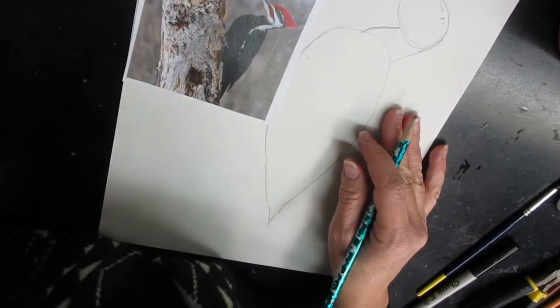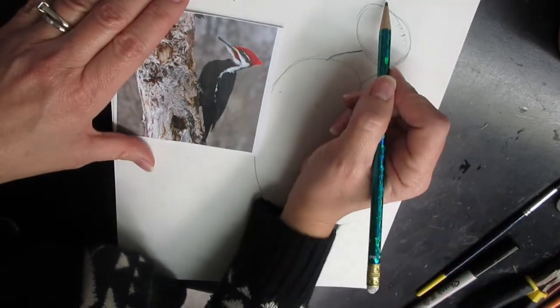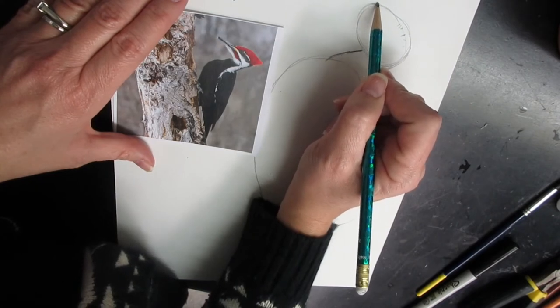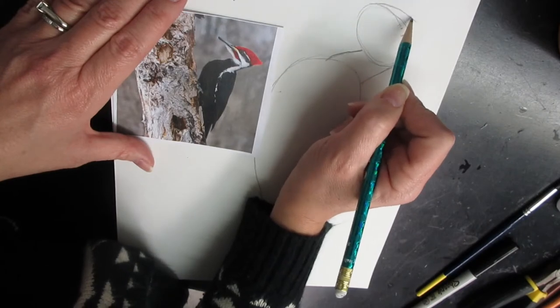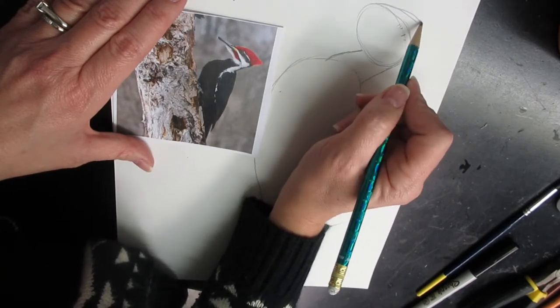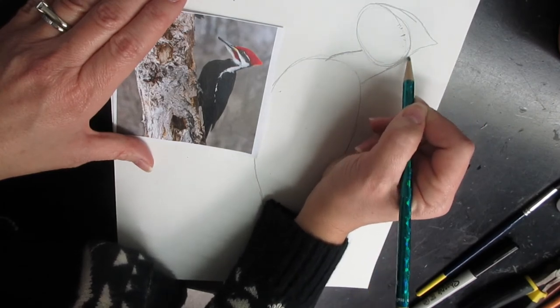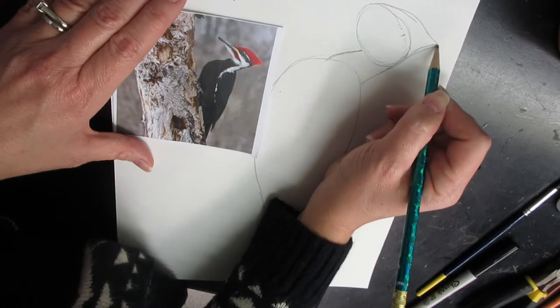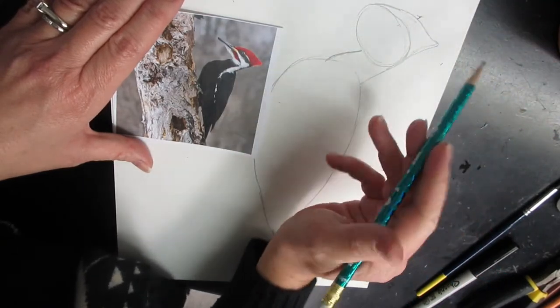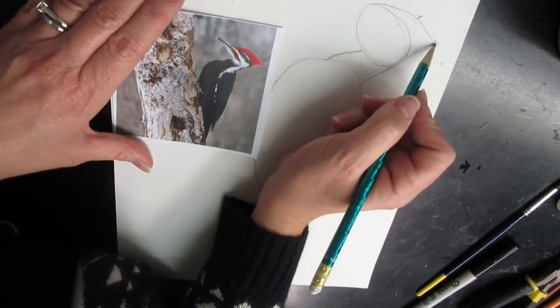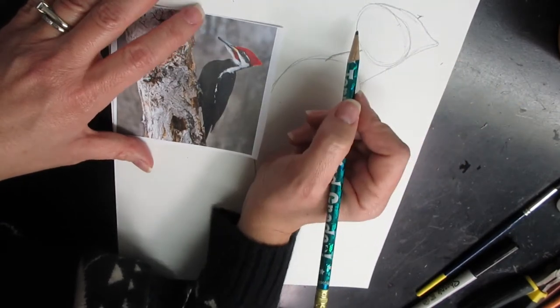So now I can start looking at more detailed things like the crest at the top of the head. It starts way up here at the front of the head. I think it's going to come up a little bit higher. That's about the shape that I want. So I make mistakes too, but I don't stop and erase them right away. I finish my line and then go back and fix them. That way I can learn from my mistakes and I don't keep making the same mistake.